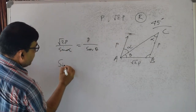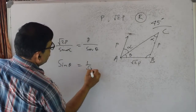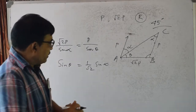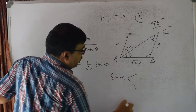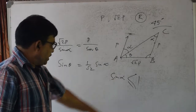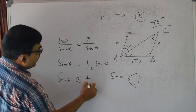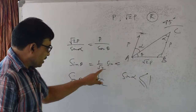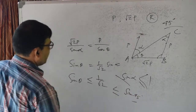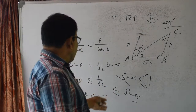What does sin theta mean? Sin theta is 1 by root 2. We know sin alpha is less than or equal to 1. So what we said: sin theta is less than or equal to 1 by root 2. Sin alpha is less than or equal to 1, so sin alpha is less than or equal to 35 degrees.